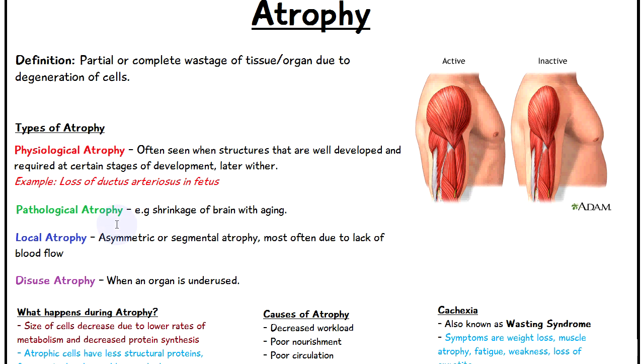We also have pathological atrophy, where the cause is due to some form of pathology. An example can be the shrinkage of the brain with aging.